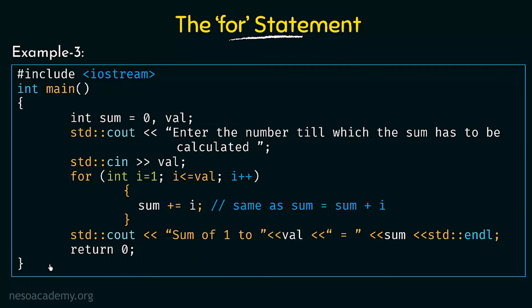That is how the for statement works. Remember the order of execution: the initialization part, then the condition, then execution of statements, then the increment. In the second iteration we check the condition again, statements execute, then increment, and it goes on till the condition becomes false. The for loop is used for performing some operation or running a piece of code again and again — that is why we call it a loop. I hope this lecture about the for statement and how to run for loops is clear to you. Thank you for watching and see you in the next one.